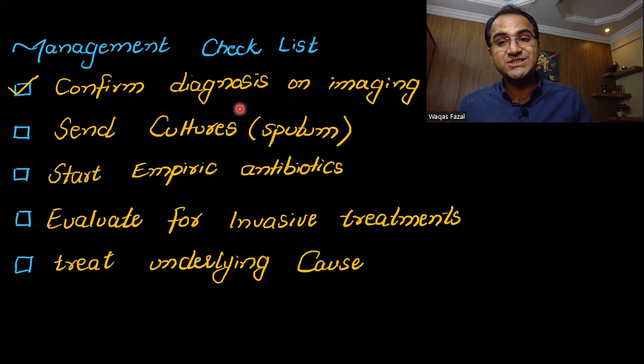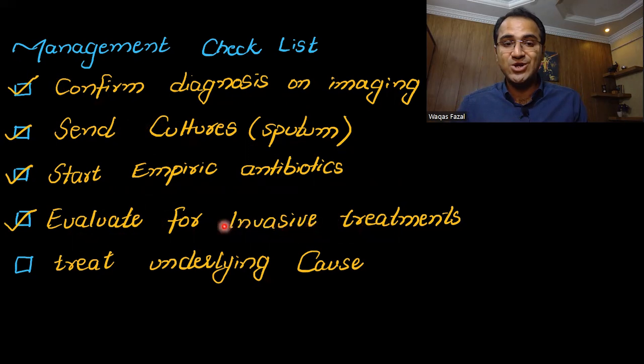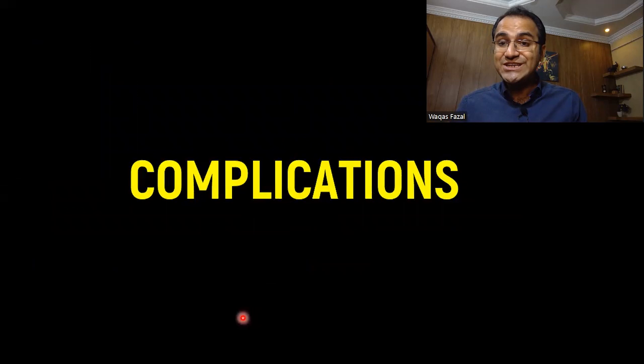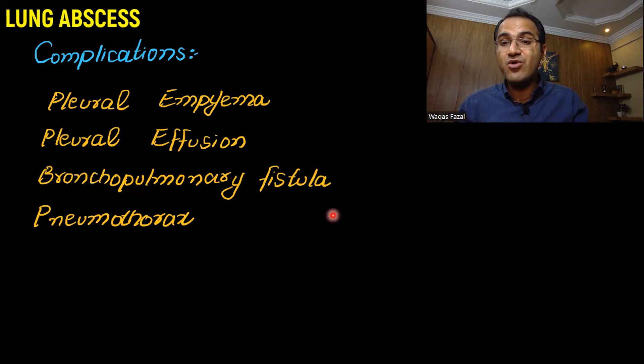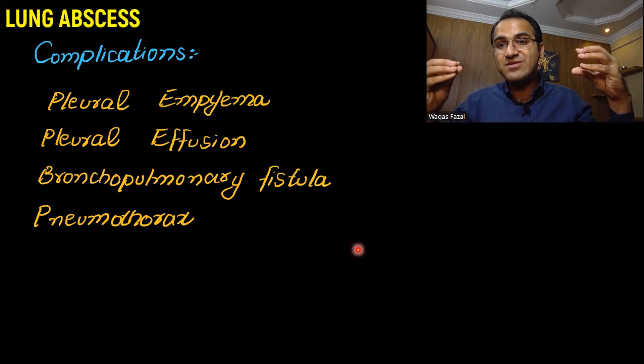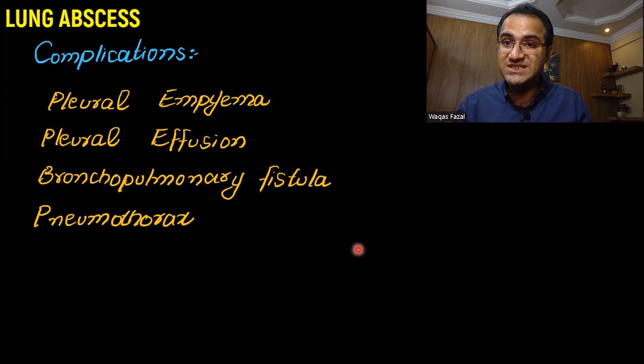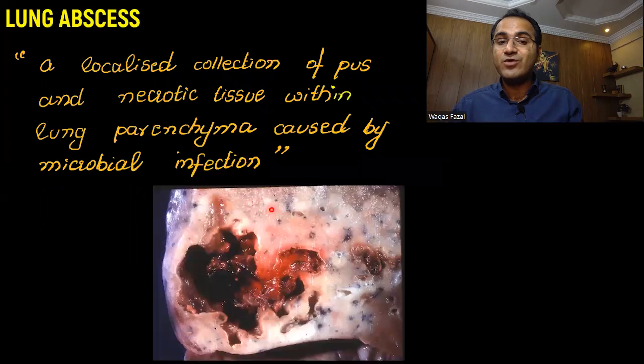If a patient comes to you with lung abscess, the management checklist is: confirm the diagnosis on imaging — chest X-ray and CT scan — obtain sputum cultures, start empiric antibiotic therapy, evaluate for invasive treatment, and treat the underlying cause. Complications of lung abscess include pleural empyema, pus formation in the pleural cavity, pleural effusion, bronchopulmonary fistula — an opening between the lungs and the pleural cavity, which is one of the most dangerous complications if left untreated — and pneumothorax.